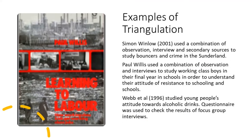Here are some examples of studies using triangulation. Simon Winloo used a combination of observation, interview, and secondary sources to study bouncers and crime in Sunderland. Paul Willis used a combination of observation and interviews to study working class boys in their final year of schooling, in order to understand their attitude of resistance to schooling. Webb and his co-researchers studied young people's attitudes towards alcoholic drinks — questionnaires were used to check the results of focus group interviews.